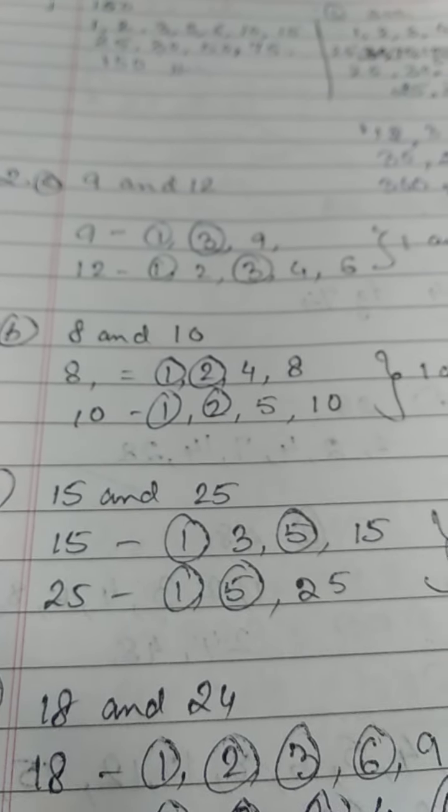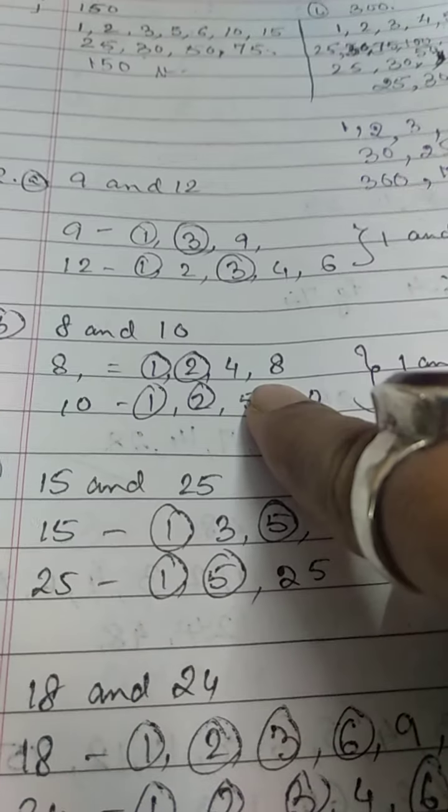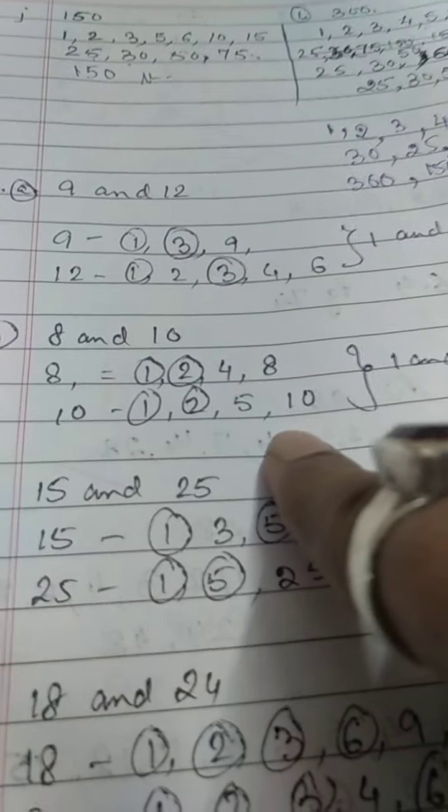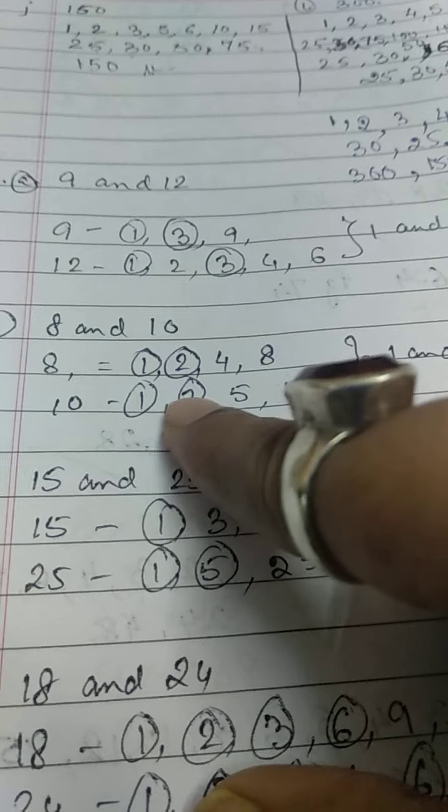Next, 8 and 10. For 8: 1, 2, 4, 8. For 10: 1, 2, 5, 10. Common is 1 and 2.